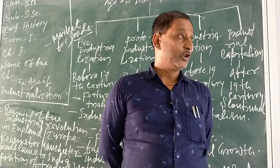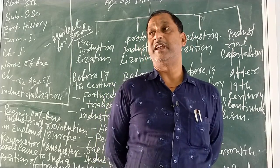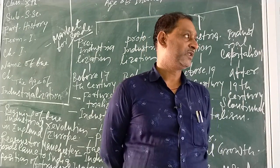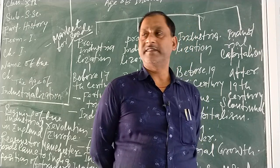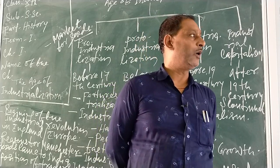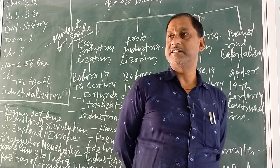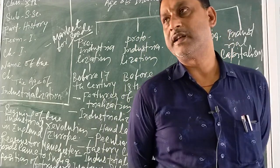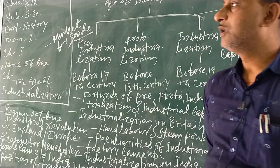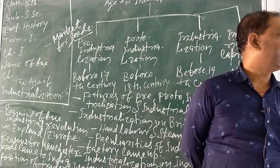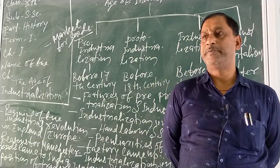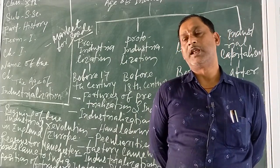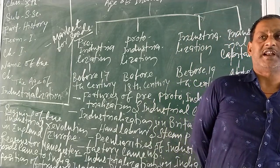In Europe, industrialization was carried out with the help of simple machines. Proto-industrialization forwarded to industrialization with the help of simple machines. These simple machines concerned with production were arranged across Europe, especially in England, and those were finished at the center of London. So London became the finishing center during proto-industrialization.